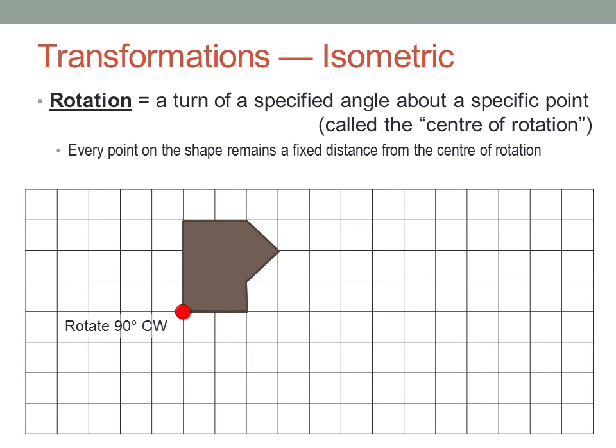A rotation is a turn of a specified angle about a specific point called the centre of rotation. The centre of rotation must always be specified. Every point on the shape will remain at the same fixed distance from the centre of rotation.